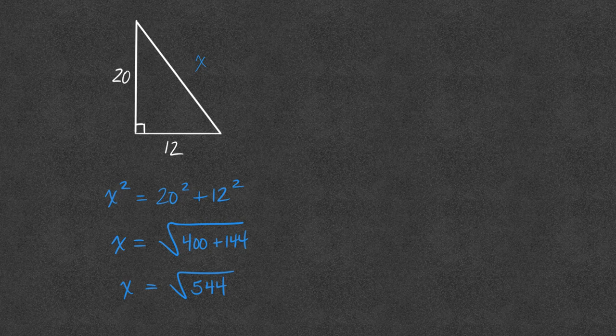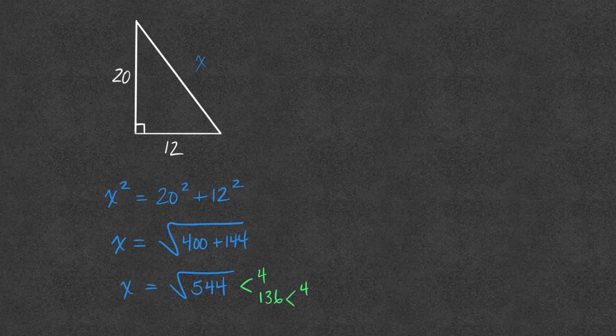And for some of us, squaring those numbers you see on the screen might have been enough. Or you now get 544 and you have to take the root of that. So now you're trying to reduce that radical and say, 4 goes into 544, 1, 3, and 136 times. And then maybe you go, hey, 4 goes into that, 25 and 34 times.